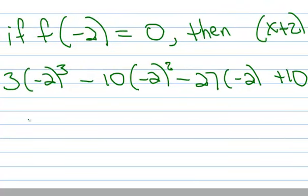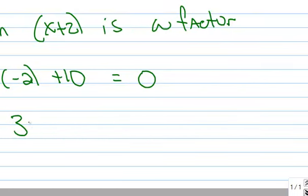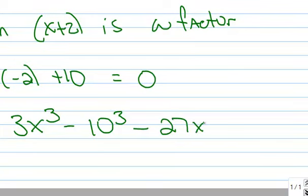So that means when I factor this, I have x plus 2 and then some other unknown factors. That's all part of the full factorization of this cubic polynomial. That's the Factor Theorem.